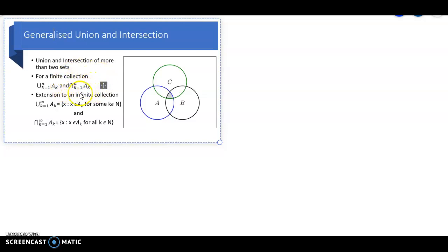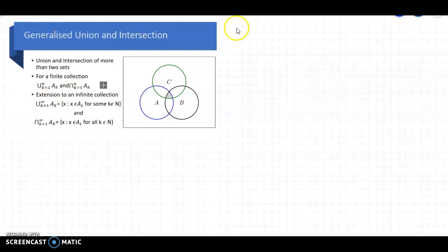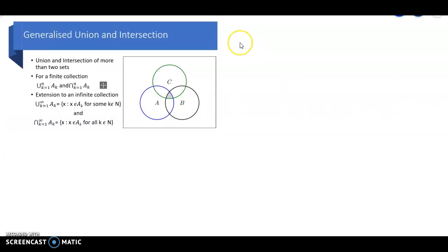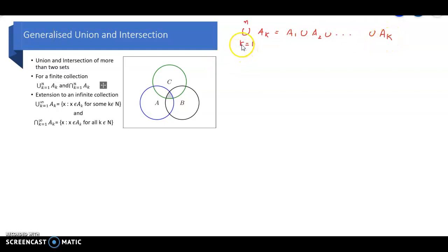The intersection is the collection of all points which are common to all of A1, A2, ..., A-sub-N. The collection of all points which are either in A1 or in A2 or in A3, etc., or in A-sub-N, is the union. It is denoted by union k equal to 1 to N of A-sub-k, which can be written as A1 union A2 union, etc., union A-sub-N.